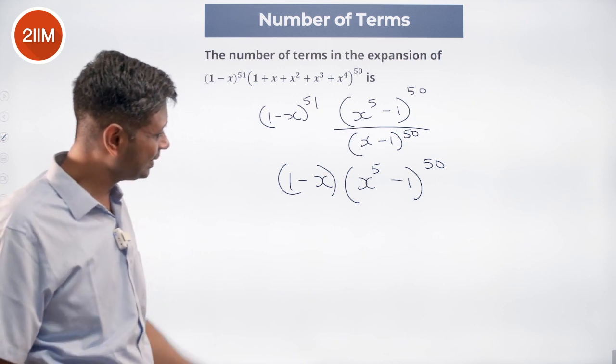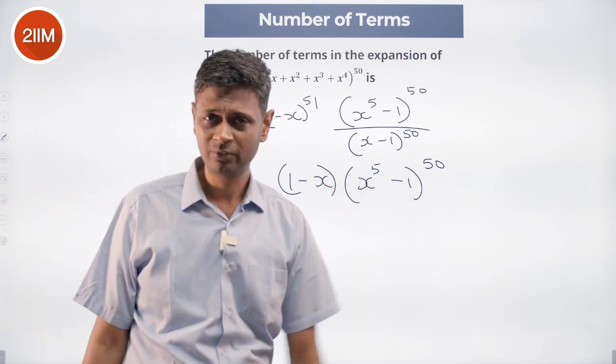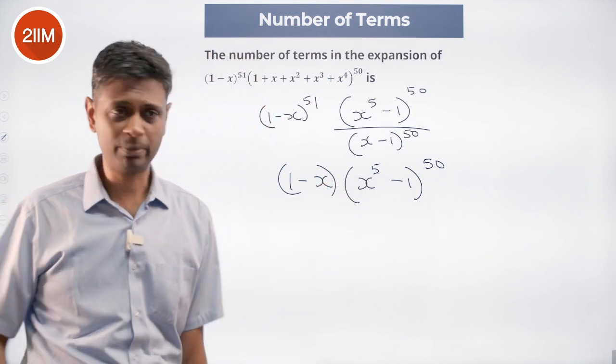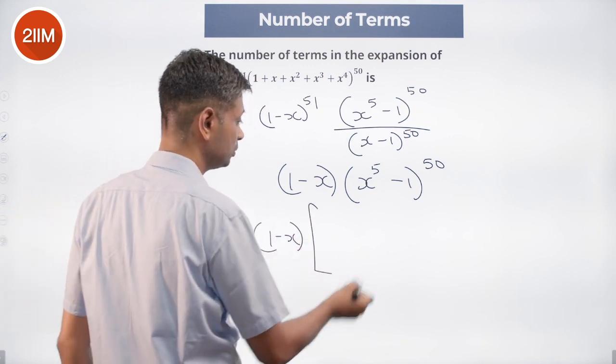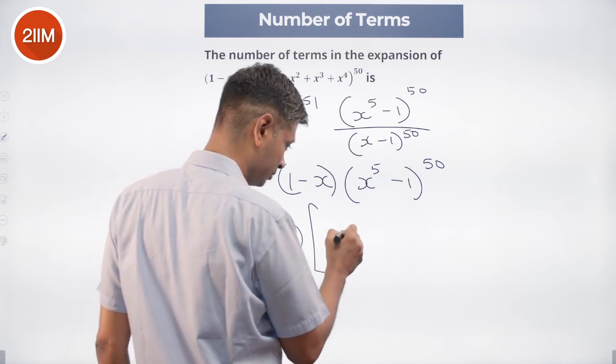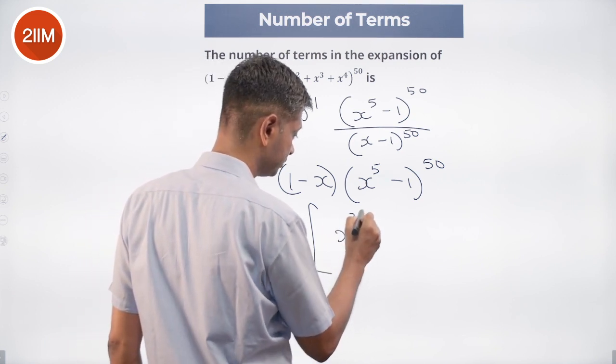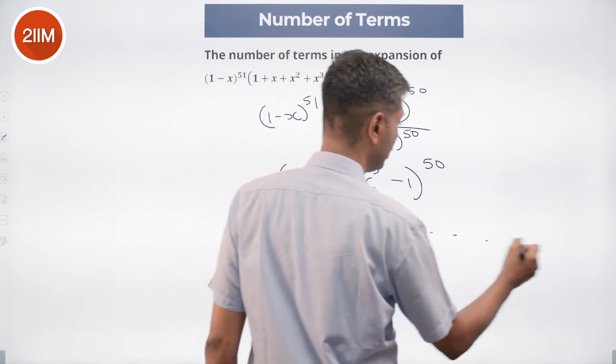So we say, this I can expand, our typical binomial expansion thing. This will be 1 minus x into there will be a x power 250 term and there will be a 1 term.